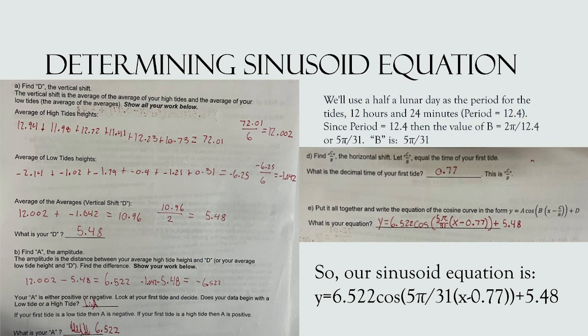Since our data starts with a high tide, the next step is to find b. Since we're using a lunar period of 12 hours and 24 minutes, the period is 12.4, so the value of b equals 2π over 12.4. We can translate 2π over 12.4 to 5π over 31, so our b is 5π/31.